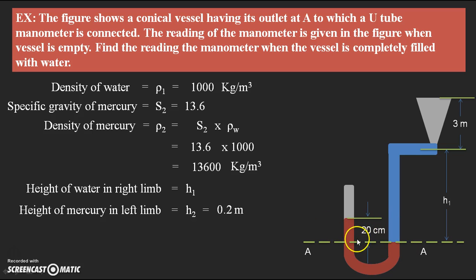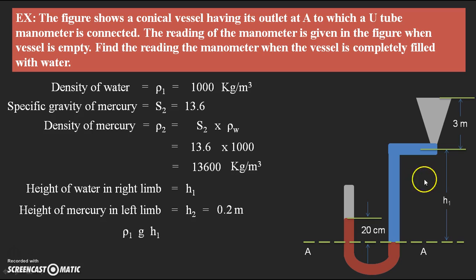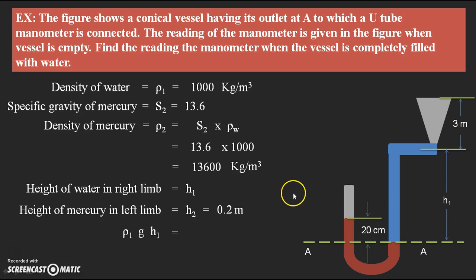When a constant level is obtained, the equilibrium condition takes place. Whatever pressure acts in the right limb equals the pressure acting in the left limb. Pressure in the right limb can be written as ρ1·g·H1, from the hydrostatic law. That equals pressure in the left limb written as ρ2·g·H2. Substituting all known values except H1, we can find the height of water in the right limb.